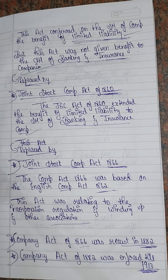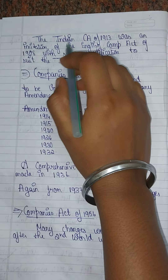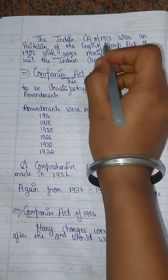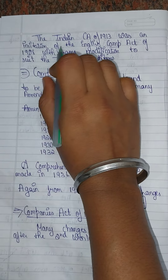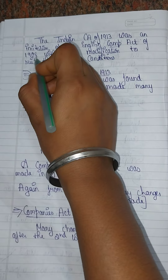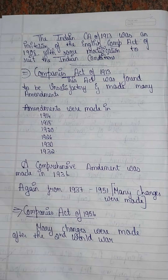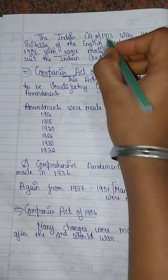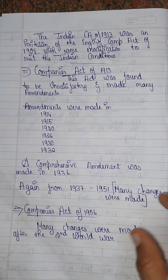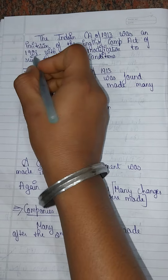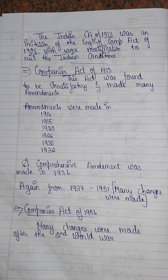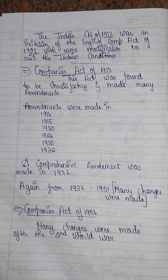The Indian Companies Act of 1913 was an imitation of the English Companies Act 1908, with some modifications to suit Indian conditions. So the Companies Act 1913 was framed on the basis of the English Companies Act 1908, with some modifications.